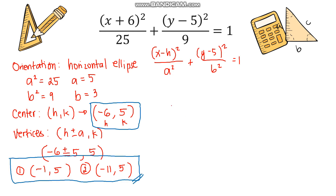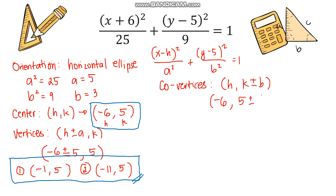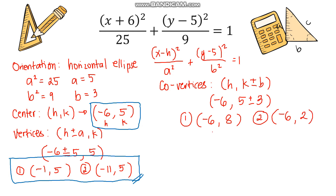For the co-vertices, since the ellipse is horizontal we follow the form (h, k ± b). With h = −6, k = 5, and b = 3: the first co-vertex is (−6, 5 + 3) = (−6, 8), and the second is (−6, 5 − 3) = (−6, 2). So the co-vertices are at (−6, 8) and (−6, 2).